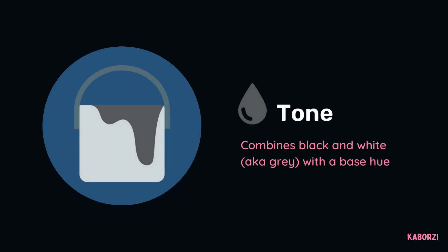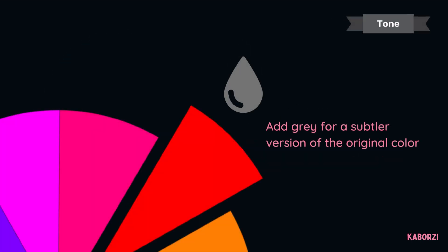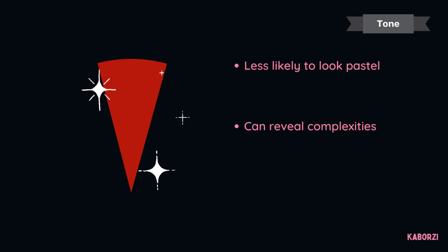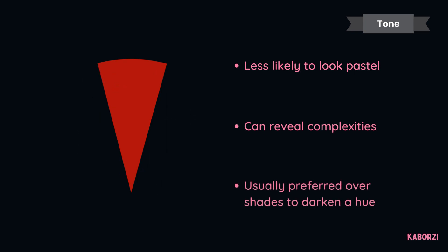Tones: a tone is created by combining black and white — or gray — with a base hue. Like tints, tones are subtler versions of the original color. Tones are less likely to look pastel and can reveal complexities not apparent in the base color. This is a highly common variety and is usually preferred over shades to darken a hue.